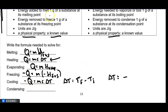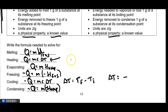For condensing, use Q = mH_vap, but since condensing is exothermic, put a negative sign in front so Q ends up being negative.